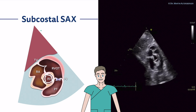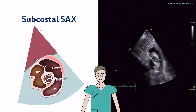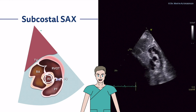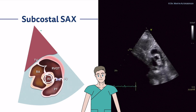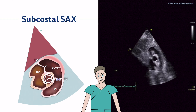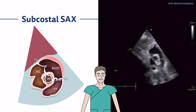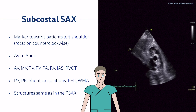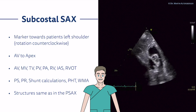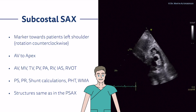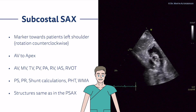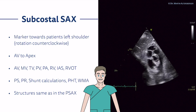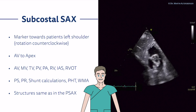From this subcostal approach you can clearly differentiate that the aortic valve is tricuspid — the right coronary, non-coronary, and left coronary cusps are all visible. If there is a pulmonary embolism, you can sometimes even visualize it directly from this subcostal approach. Additionally, starting at the aortic valve you can tilt the transducer toward the apex, similar to how you tilt in the parasternal short axis, moving from the aortic valve to the mitral valve.